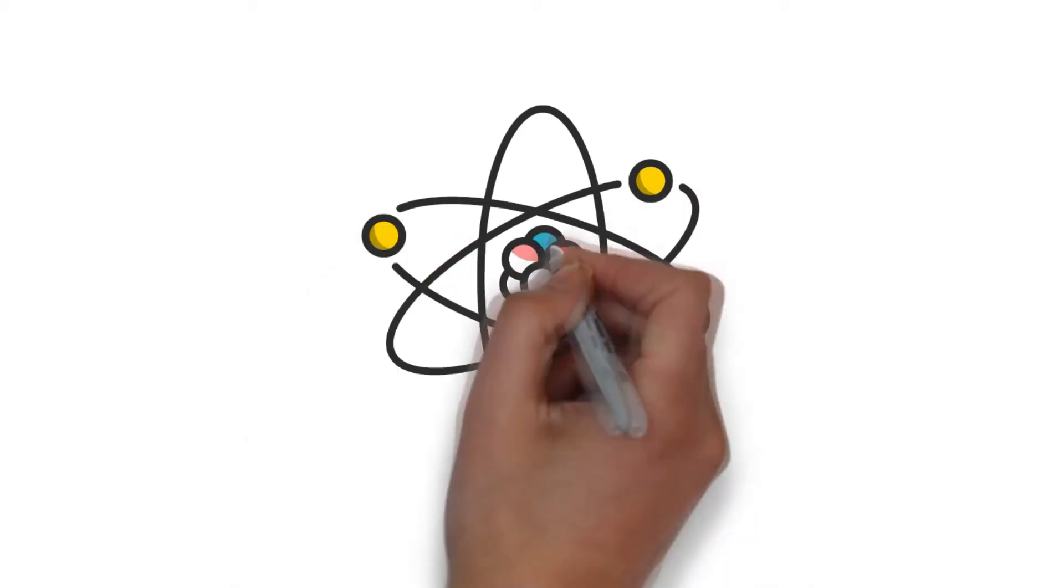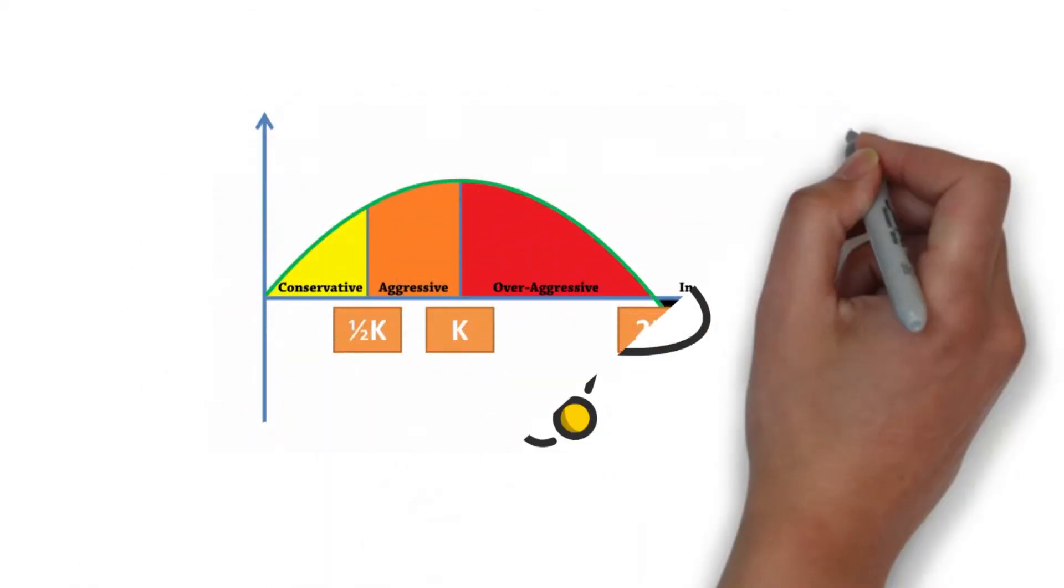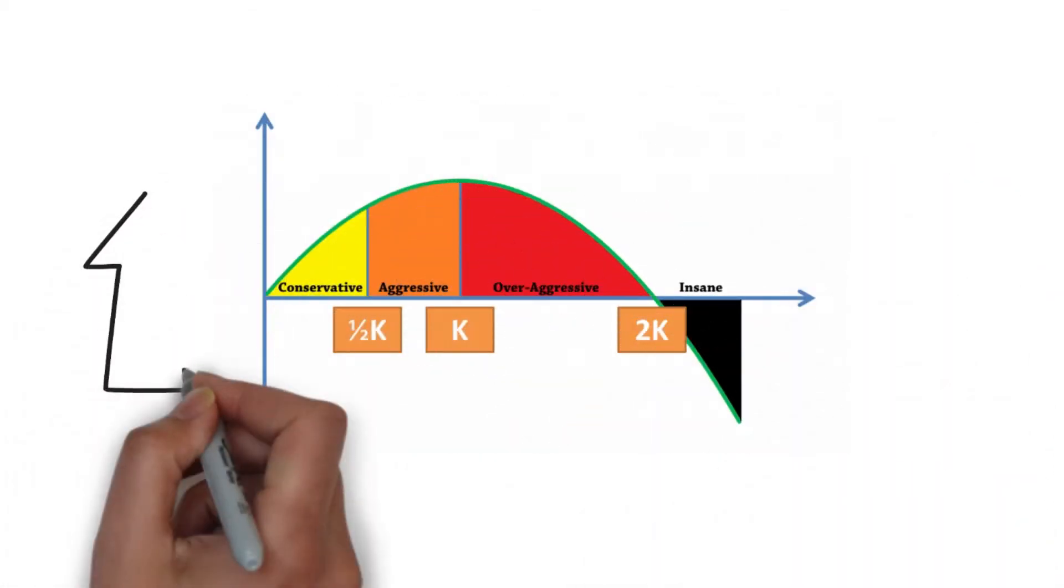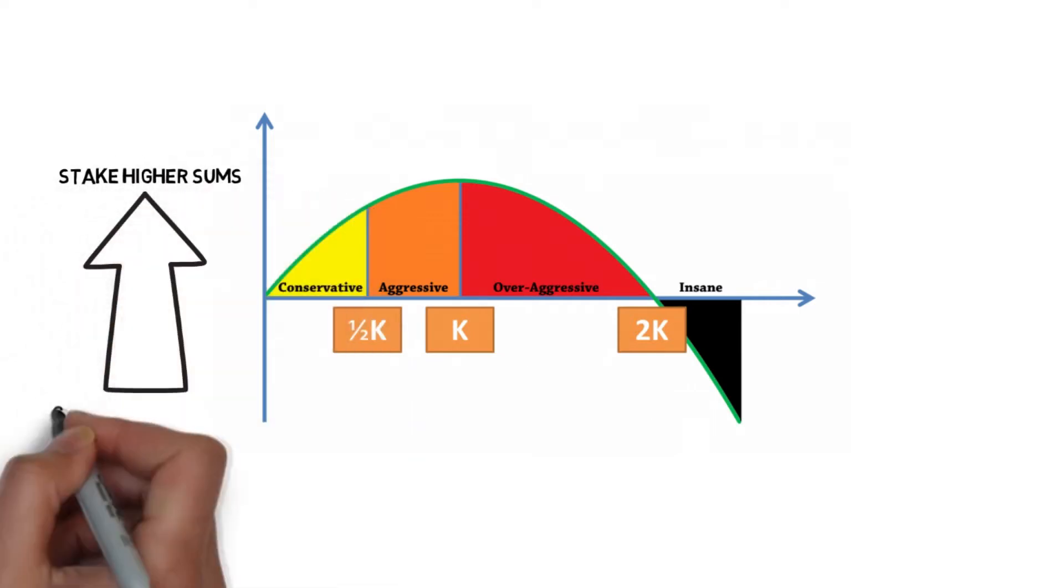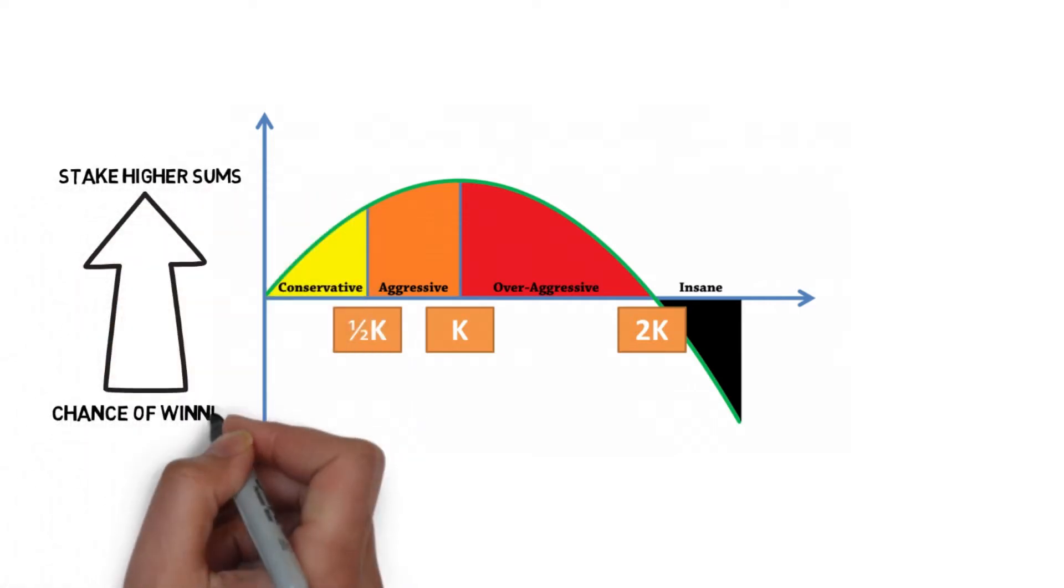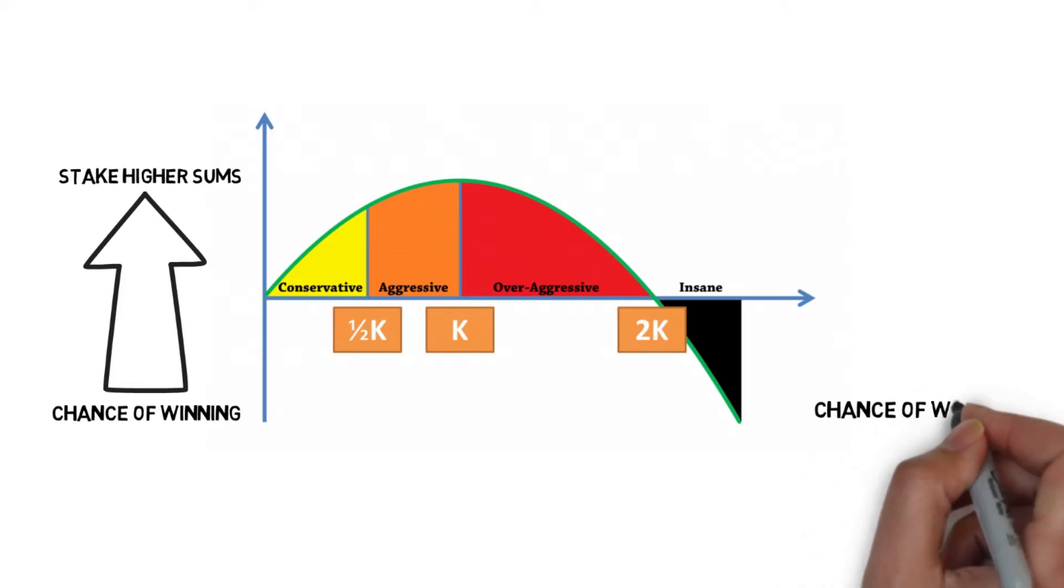But how does it work? To effectively utilize the formula, you need to incorporate the expected possibility of a bet winning. The primary purpose of the Kelly Criterion as a betting system, or algorithm, is to ensure that you stake higher sums when placing bets with a higher likelihood of winning.